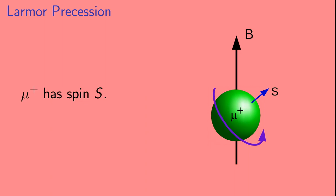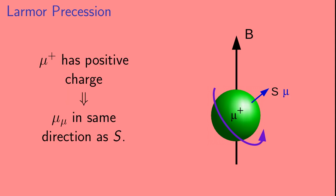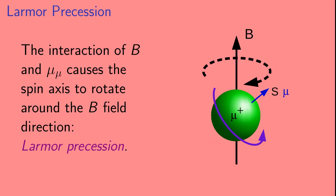The mu plus has a spin that we call S. As we saw in the video 'What is g-2 of the muon? Part 1,' the mu plus also has a magnetic moment, denoted mu sub-mu. The magnetic moment is proportional to this important parameter, g. Because the charge of the mu plus is positive, the magnetic moment points in the same direction as the spin. The interaction of the magnetic field B and the magnetic moment causes the spin axis to rotate around the B field direction. This is a phenomenon known as Larmor precession.